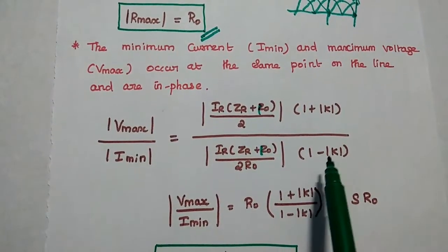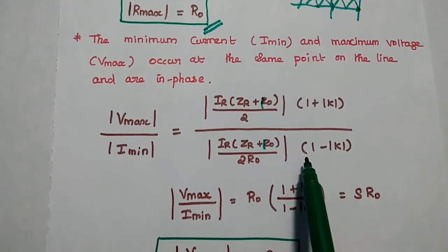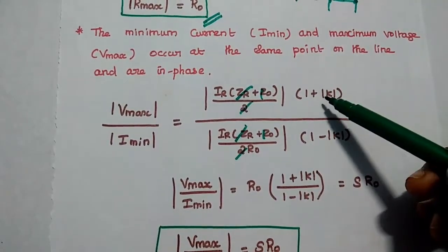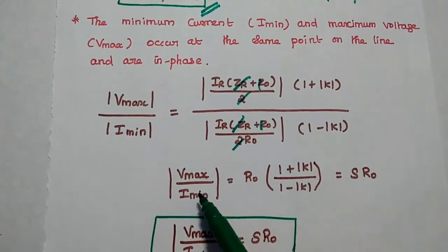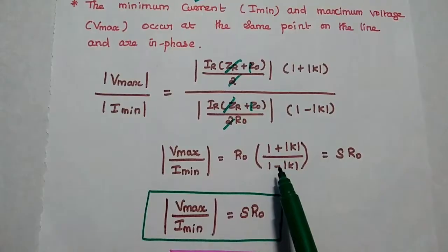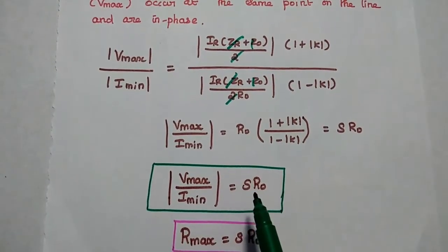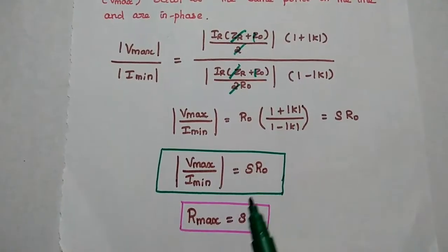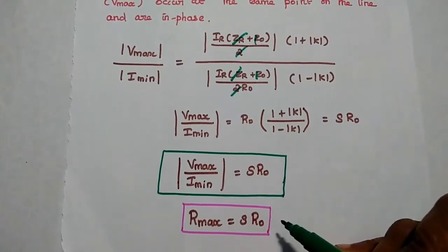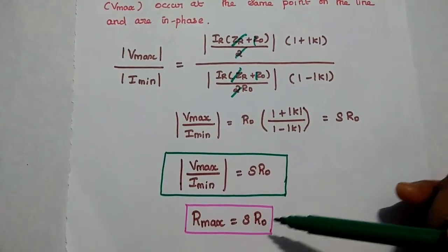For minimum values we use the minus sign, so we subtract the reflection coefficient from 1. Dividing V_max by I_min, we get V_max / I_min = R₀ × (1 + K) / (1 − K). Since (1 + K) / (1 − K) equals the standing wave ratio S, we get V_max / I_min = S × R₀. Therefore R_max = S × R₀. Whenever maximum voltage occurs, the resistance is also maximum and equals S × R₀.